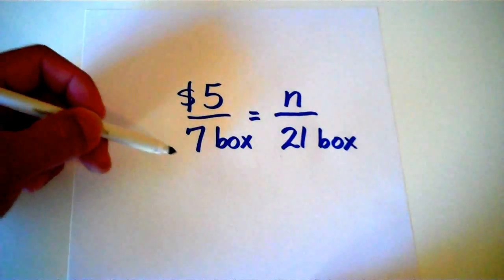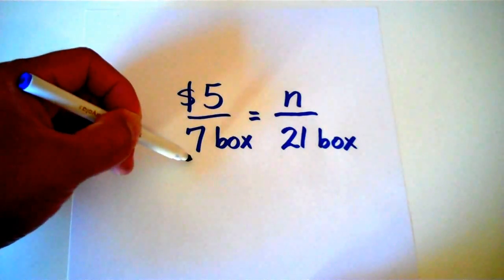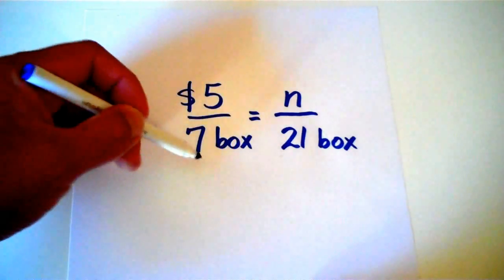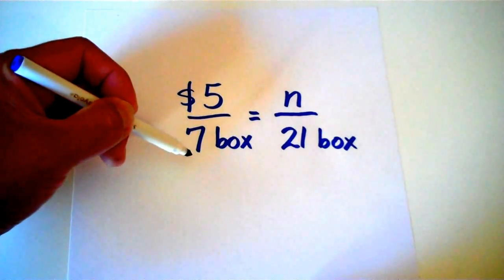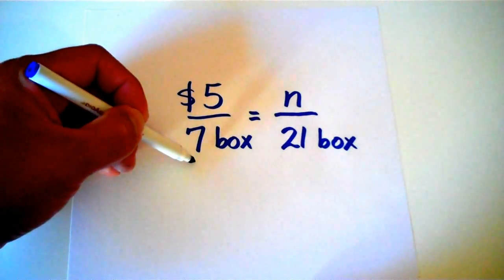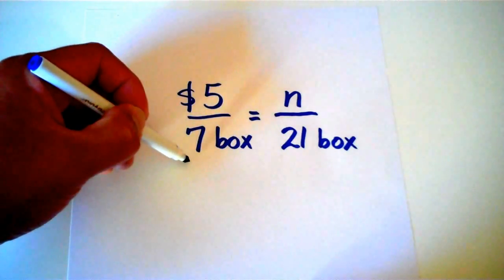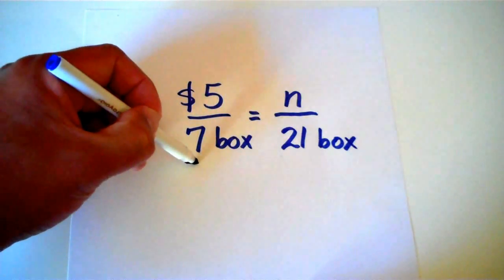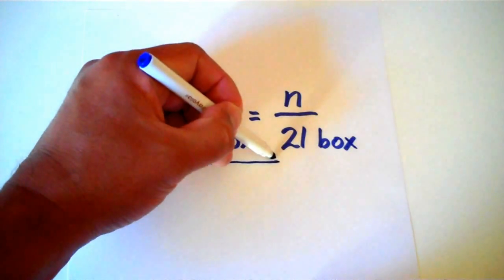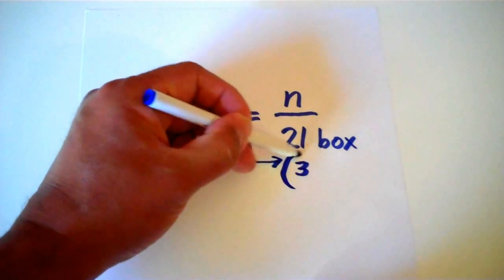So step 1 said we're going to divide smaller number, which is the 7, into the larger number, which is the 21. And the hint said to draw an arrow. The reason why we want to draw an arrow is we want to show which direction our Z is going to take so we can actually follow the steps. So I'm going to draw the arrow and 7 divided into 21 is 3.